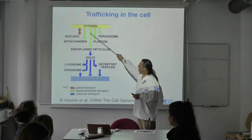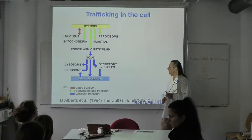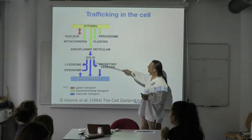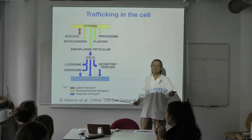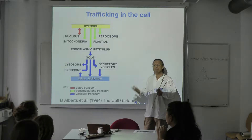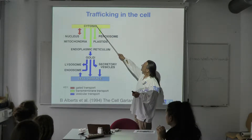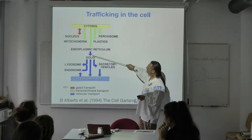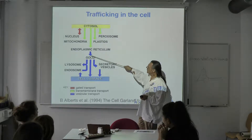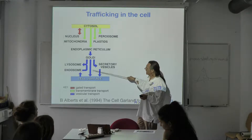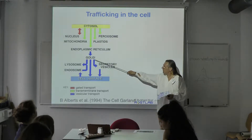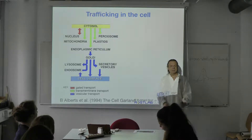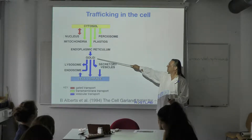There are also transmembrane and vesicular transport pathways. The major pathway people refer to is secretion — not because most proteins do it, but because it is the best understood. A protein meant for secretion will go through all these compartments: the ER, the endoplasmic reticulum, through the Golgi, typically through vesicles, and then exit. Some proteins will be retained in the ER and some in the Golgi.